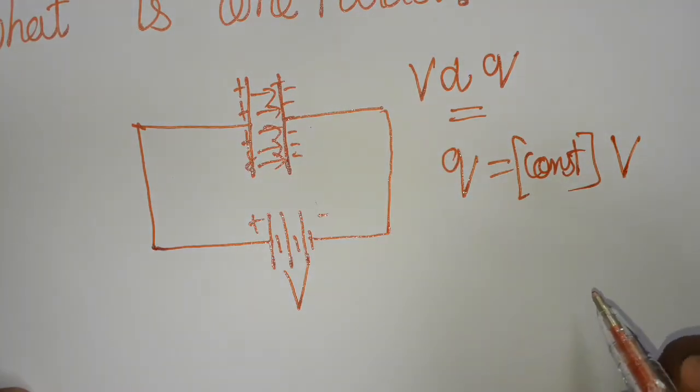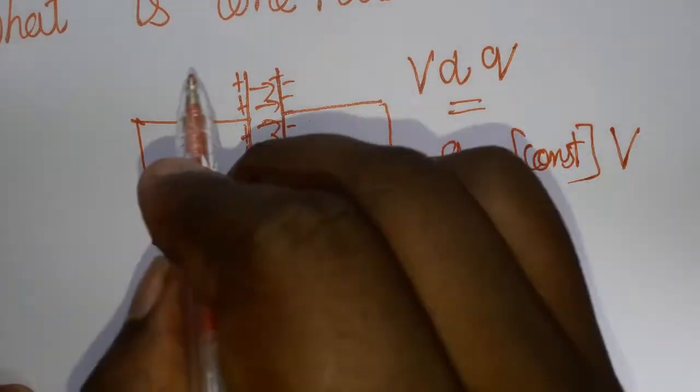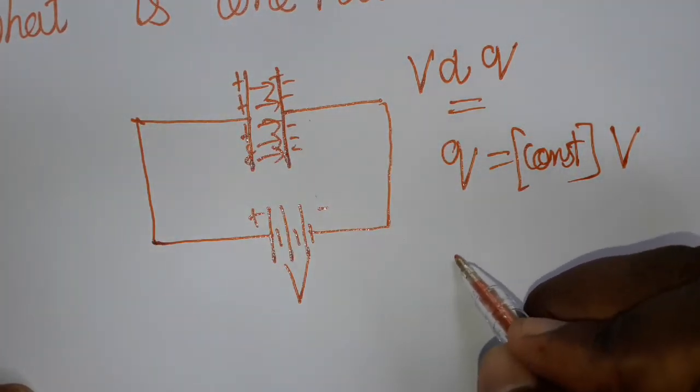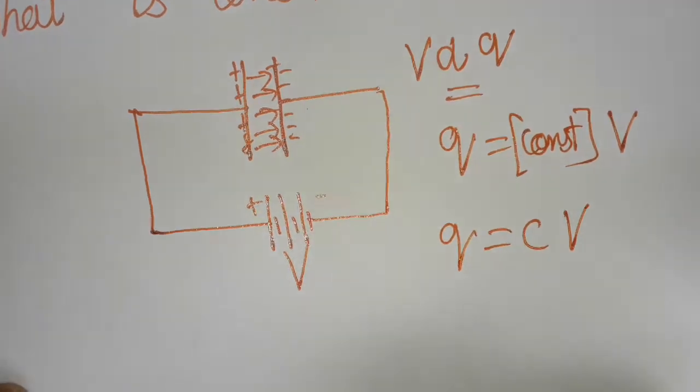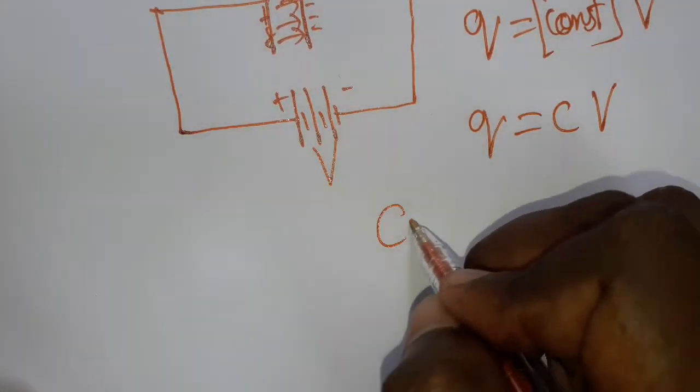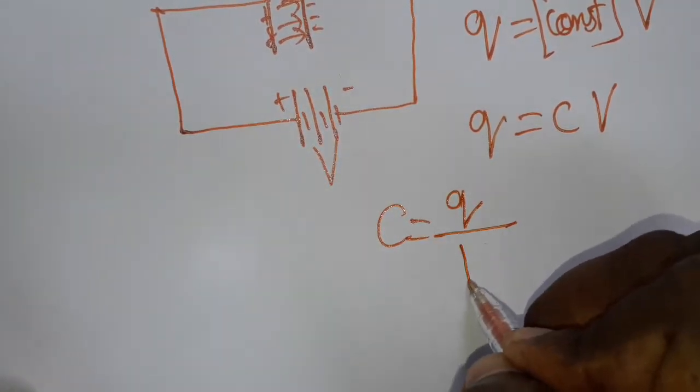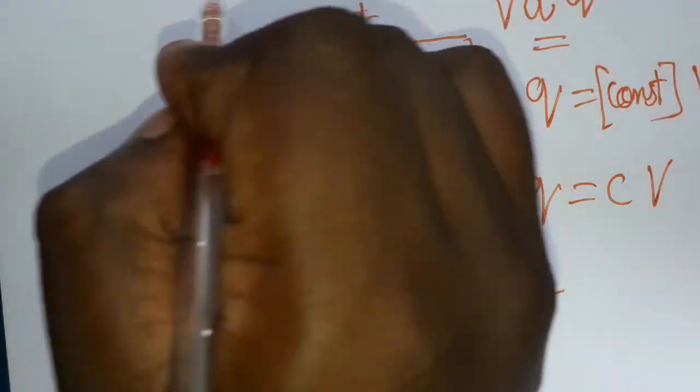The constant here is C, the capacitance of the capacitor. Q equals CV. Now, C equals Q divided by V. Our question is: what is one farad?